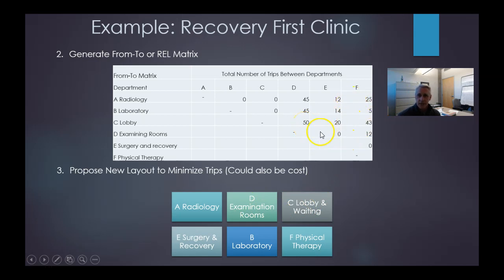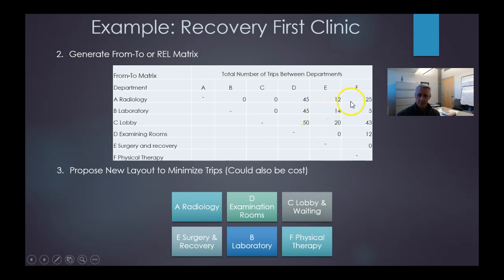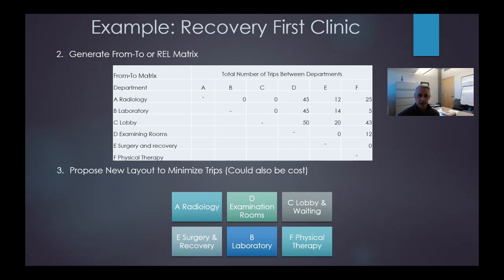Then you look at the next largest numbers. D to A and D to B are both 45, so we want those to be one unit away as well. The next value is 43, which is F to C, which is why we place F close to C. Since those are the largest numbers, the only remaining place for E is in the remaining open spot. This was done by trips; cost could also be a factor in other cases.